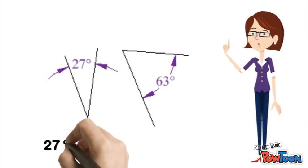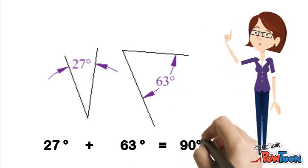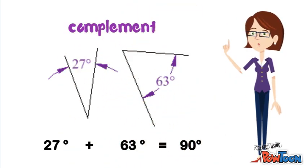If the sum of the angles is equal to 90 degrees, we say that they complement each other.